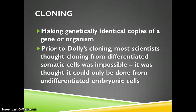When you're cloning something, you're making genetically identical copies of a gene, a cell, or an organism. Dolly the sheep was cloned in England in the 1990s. Before Dolly, many scientists didn't think it would ever be possible to clone an organism from a differentiated somatic body cell — they knew cloning from embryonic cells was possible, but not from differentiated mature cells. Dolly's cloning was therefore a major step forward in genetic engineering.